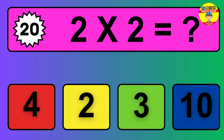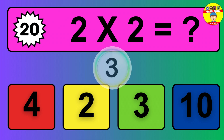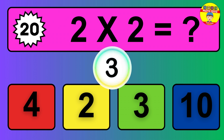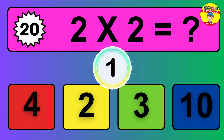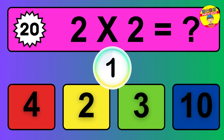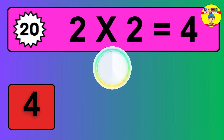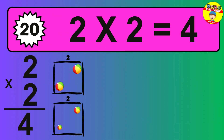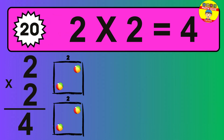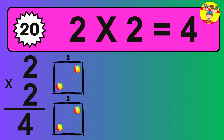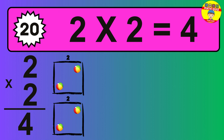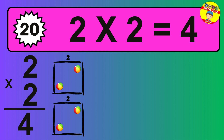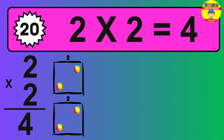Question 20. 2 times 2 equals what? The answer is 2 times 2 is 4. To calculate, we have 2 groups with 2 balls each one. So how many balls do we have? 4 balls.